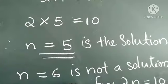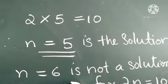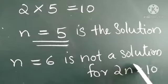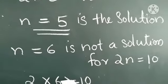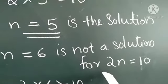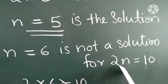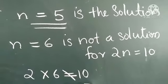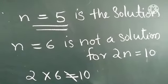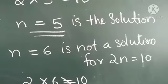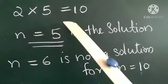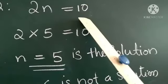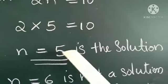Is n equal to 6 a solution? No. n equal to 6 is not a solution. Because if we substitute n equal to 6, we get 2 into 6, and 2 into 6 is not equal to 10 — 2 into 6 is 12. So the solution of the given equation 2n equal to 10 is n equal to 5.